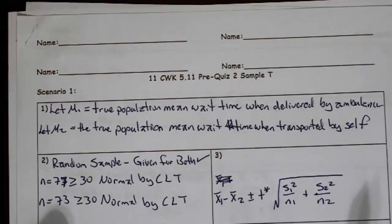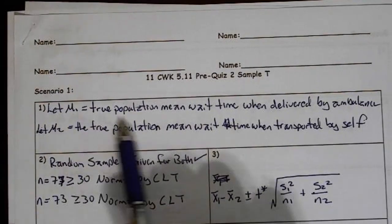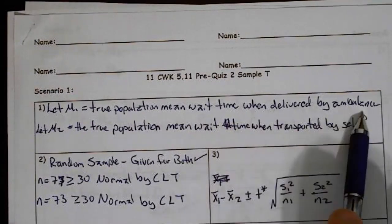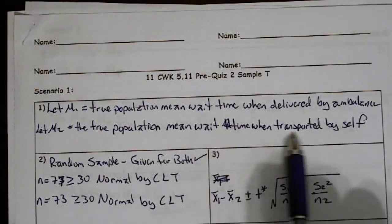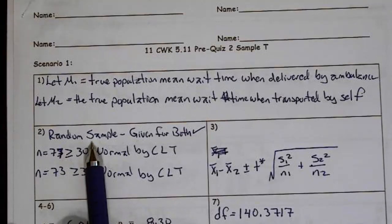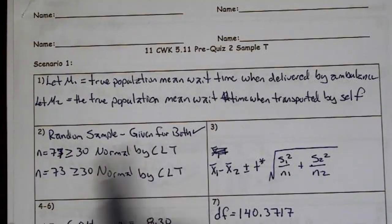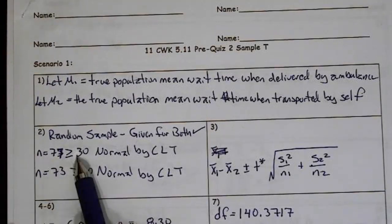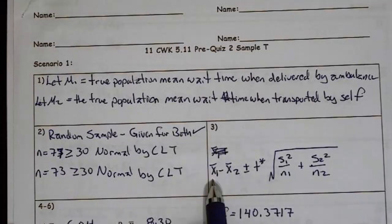So our very first thing we have to do, and you need to be looking at your formative charts, your recipe cards, let mu equal the true population mean wait time when delivered by ambulance. Random sample was not given, we will try not to do that to you again, but since it's my mistake, random sample given for both. n equals 77, which is greater than 30, so normal by central limit theorem, and n equals 73, which is greater than 30, so also normal by central limit theorem. We wrote down our formula, x bar 1 minus x bar 2 plus or minus t star, the square root of s1 squared over n1, s2 squared over n2.